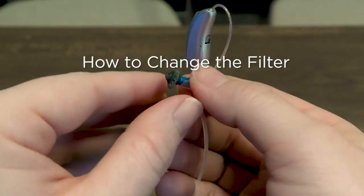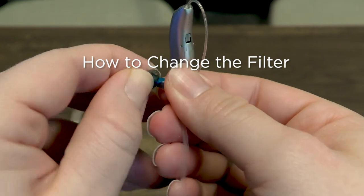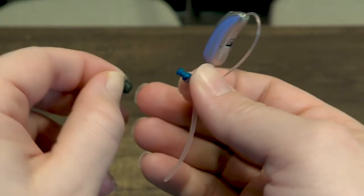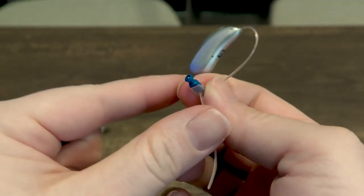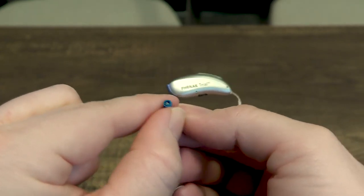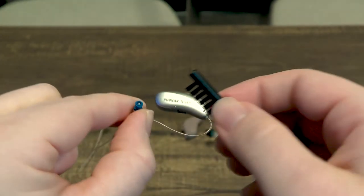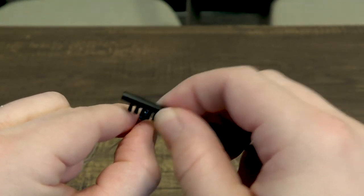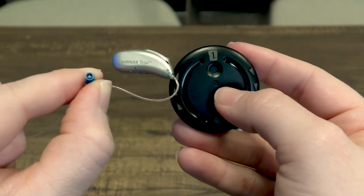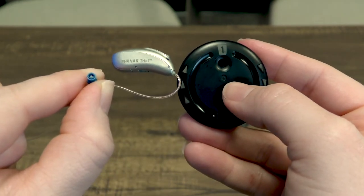Now we're going to show you how to change the filter on the Phonak Marvel hearing aid. You want to remove the dome from the hearing aid. Brush that wax out of the filter. See if you can get any wax out, if there's any visible wax. If not, you can change the wax filter.